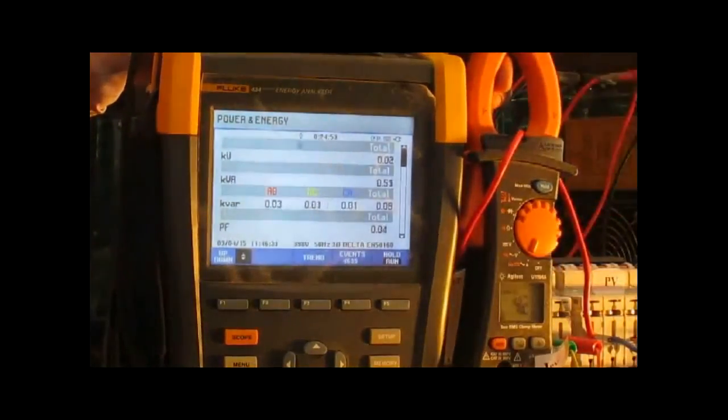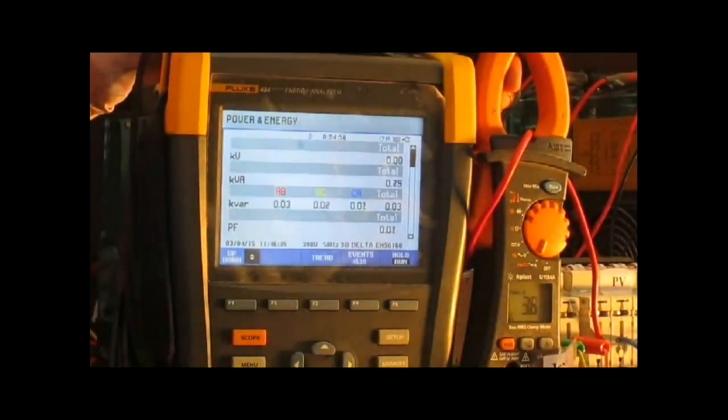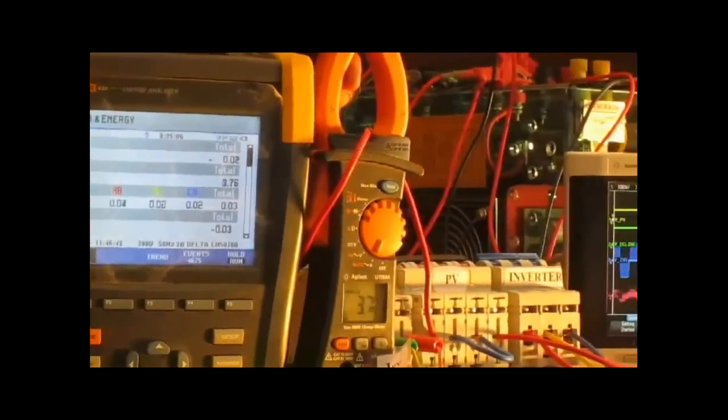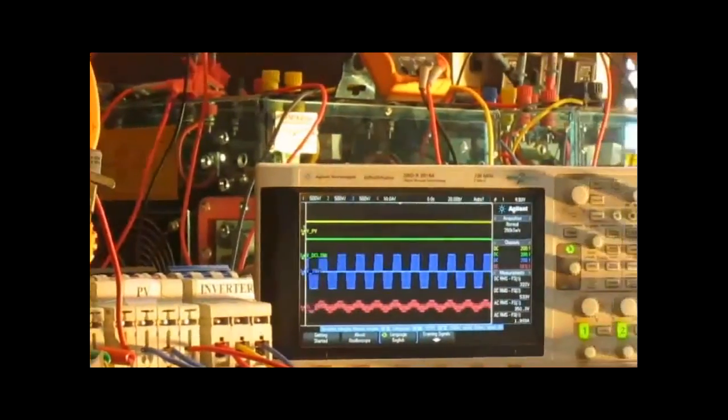Actually the power of the load is shared between IG and PV. So as the wind speed increases, IG power increases. And still the voltage to the load is maintained constant. The voltage is maintained by the PV array fed inverter.